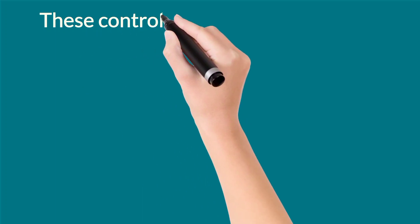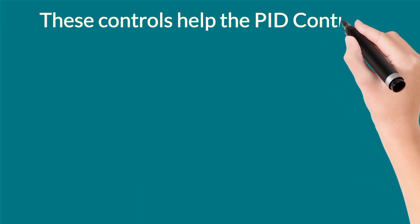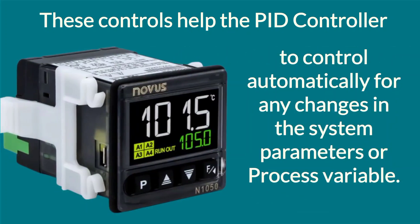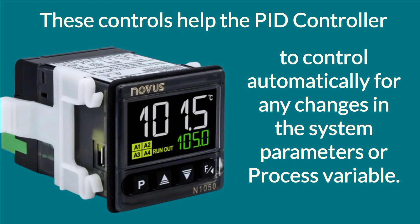These three controls help the PID controller to automatically control any change in the process variables. In this image, the upper line in white color is the process variable and the lower line in green color is the set value. If the process variable goes above the set value, the PID controller will decrease it. If the process variable goes below the set value, the PID controller will increase it. The control process is fully automatic. We can also increase or decrease the set value, and the PID controller will work according to that new set value.